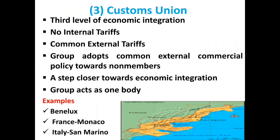The third level of integration is the customs union, in which there will be no internal tariff, a common external tariff, and the group acts as one body with a common external commercial policy with respect to non-member countries. The customs union between Belgium, Netherlands, and Luxembourg is an example. The France-Monaco Agreement and Italy-San Marino Agreement are also examples of the customs union.